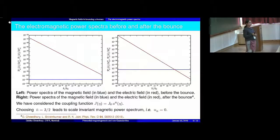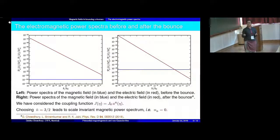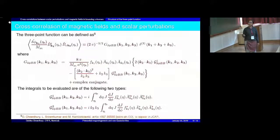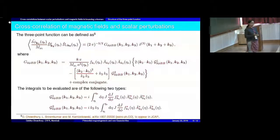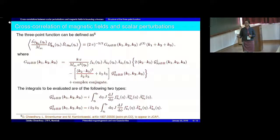However, this kind of a scale invariant magnetic power spectrum can also be obtained in inflationary scenarios. Therefore, using this behavior we cannot differentiate between the inflationary and the bouncing scenarios. So we want to go to the next step and calculate the three-point functions involving these magnetic fields. The three-point function that we consider has one mode of the scalar perturbation and two of the magnetic fields. We evaluate this cross-correlation and we can write it in this form, expressible in terms of two integrals written here. Since we have the analytical forms of these modes — the electromagnetic modes as well as the scalar modes which I have denoted as f_k — we can evaluate these integrals completely analytically. We can also obtain the total expression for the three-point function of our interest.